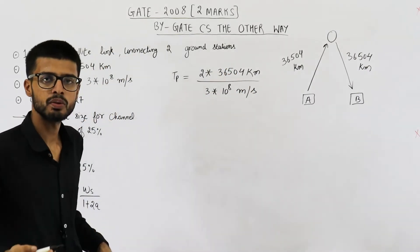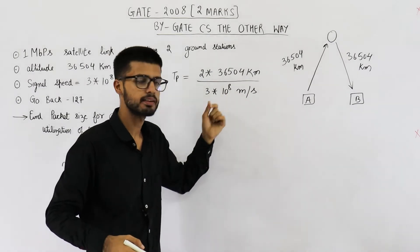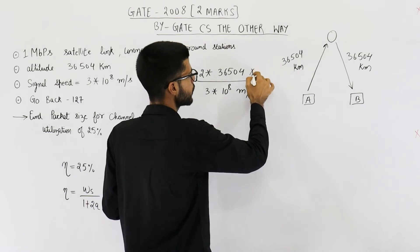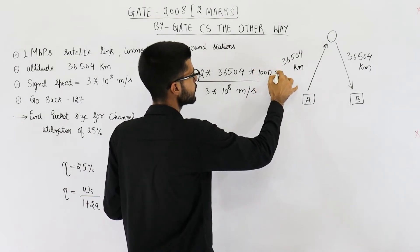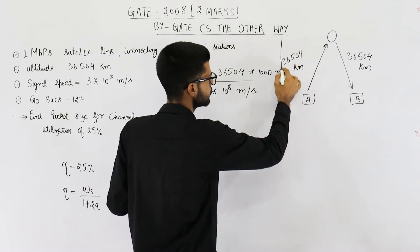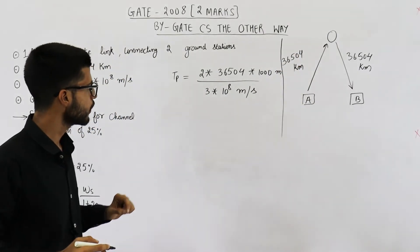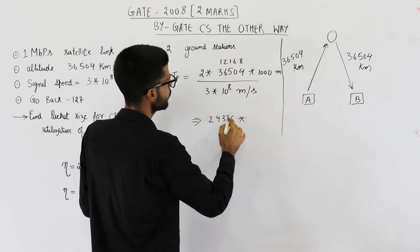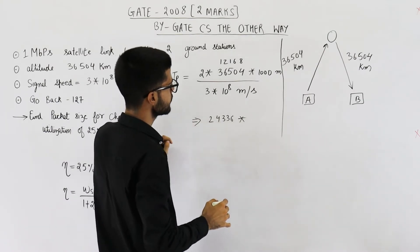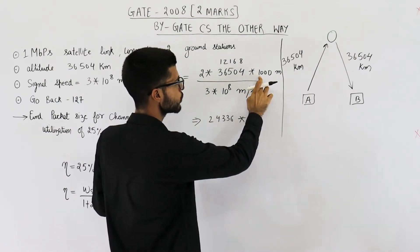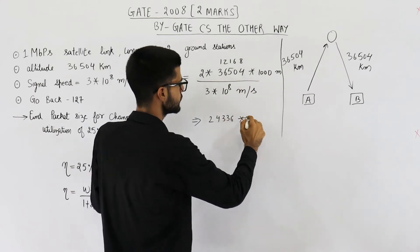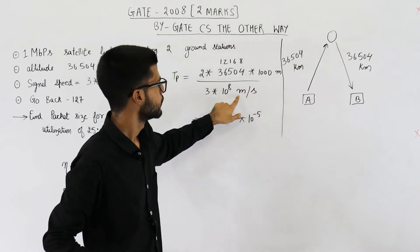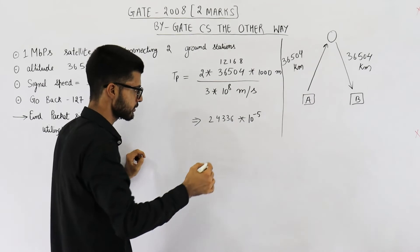Now you can see the units are not equal. This is kilometer and this is meter. So let's make the units also equal. Multiply this numerator by 1000 to convert kilometer into meters. So this is × 1000 meter. Now if you solve it, you are going to get 24,336 × 10^(3-8) which is 10^(-5) and the unit will be seconds because meter and meter will get cancelled.